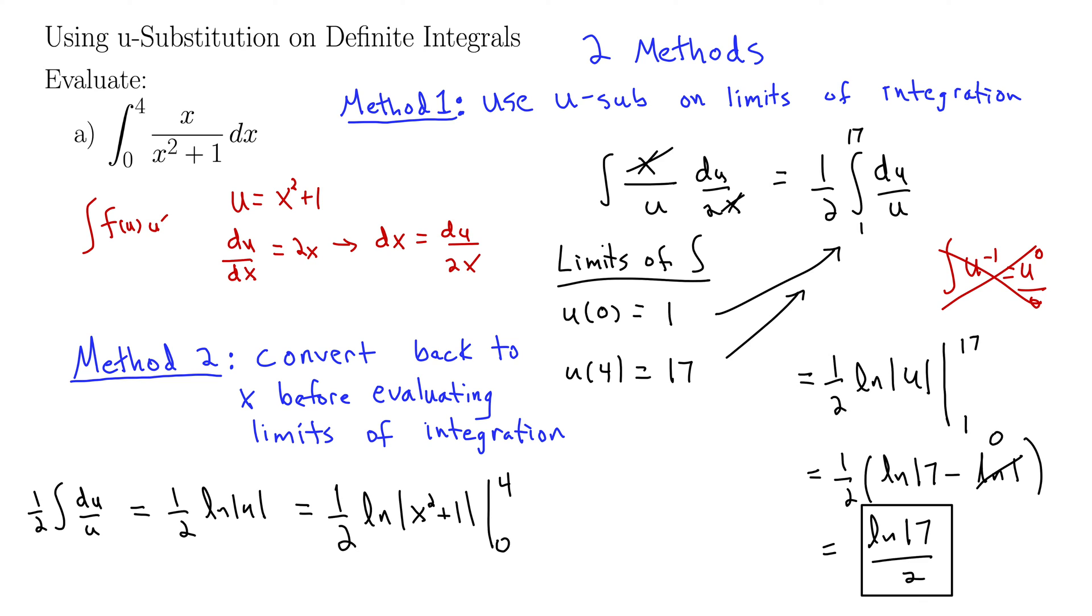And you can see we'll get the same answer. It's just a slightly different approach. I'll stick with method 1. I find it the most useful and somehow very intuitive, but certainly you're free to use method 2. Let's just evaluate this out to be on the safe side. 1 half natural log, let's see, 1 half times the quantity natural log of 17 minus natural log of 1. We don't even need these absolute values. And we get, of course, the same thing, natural log of 17 over 2.